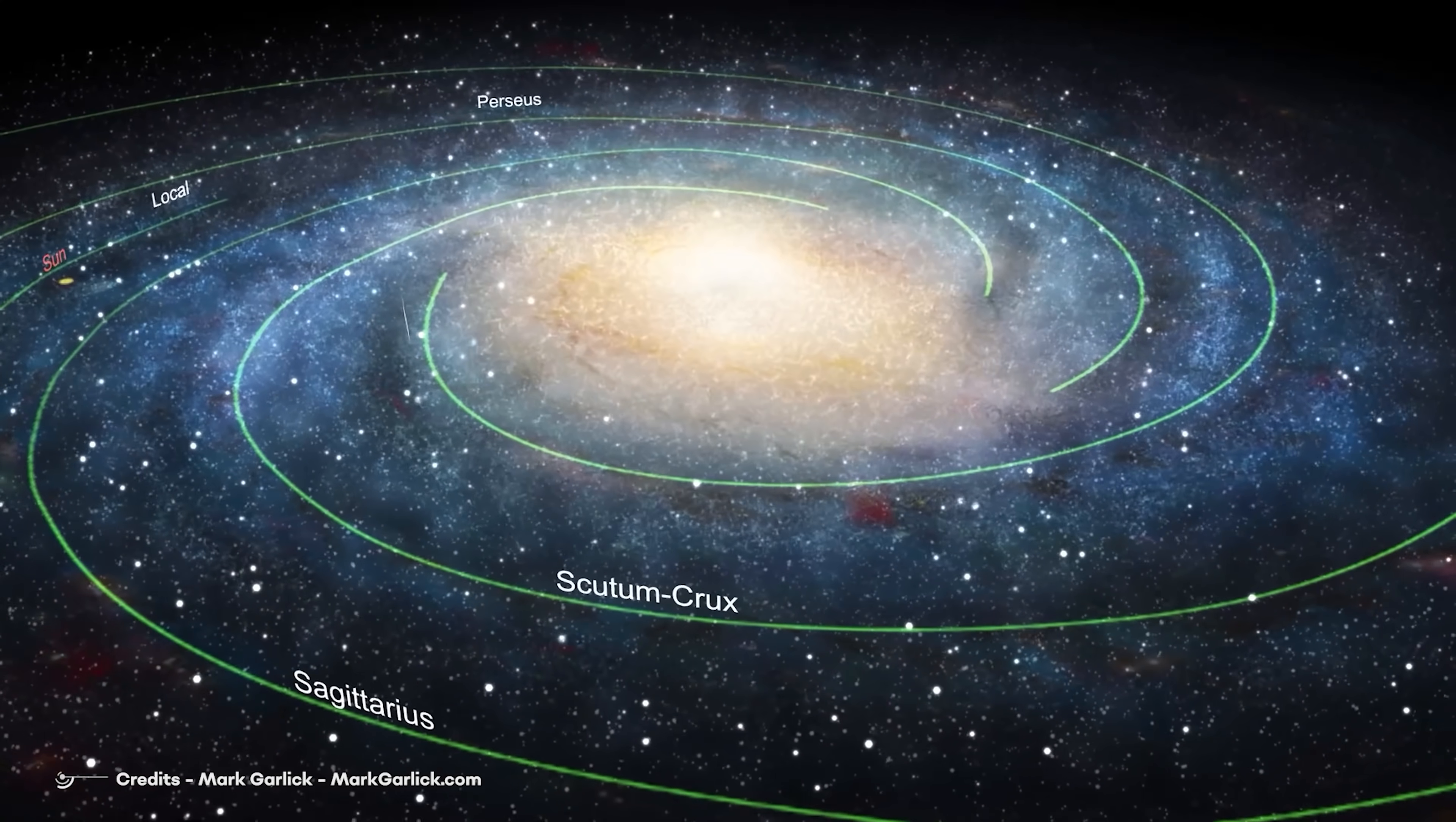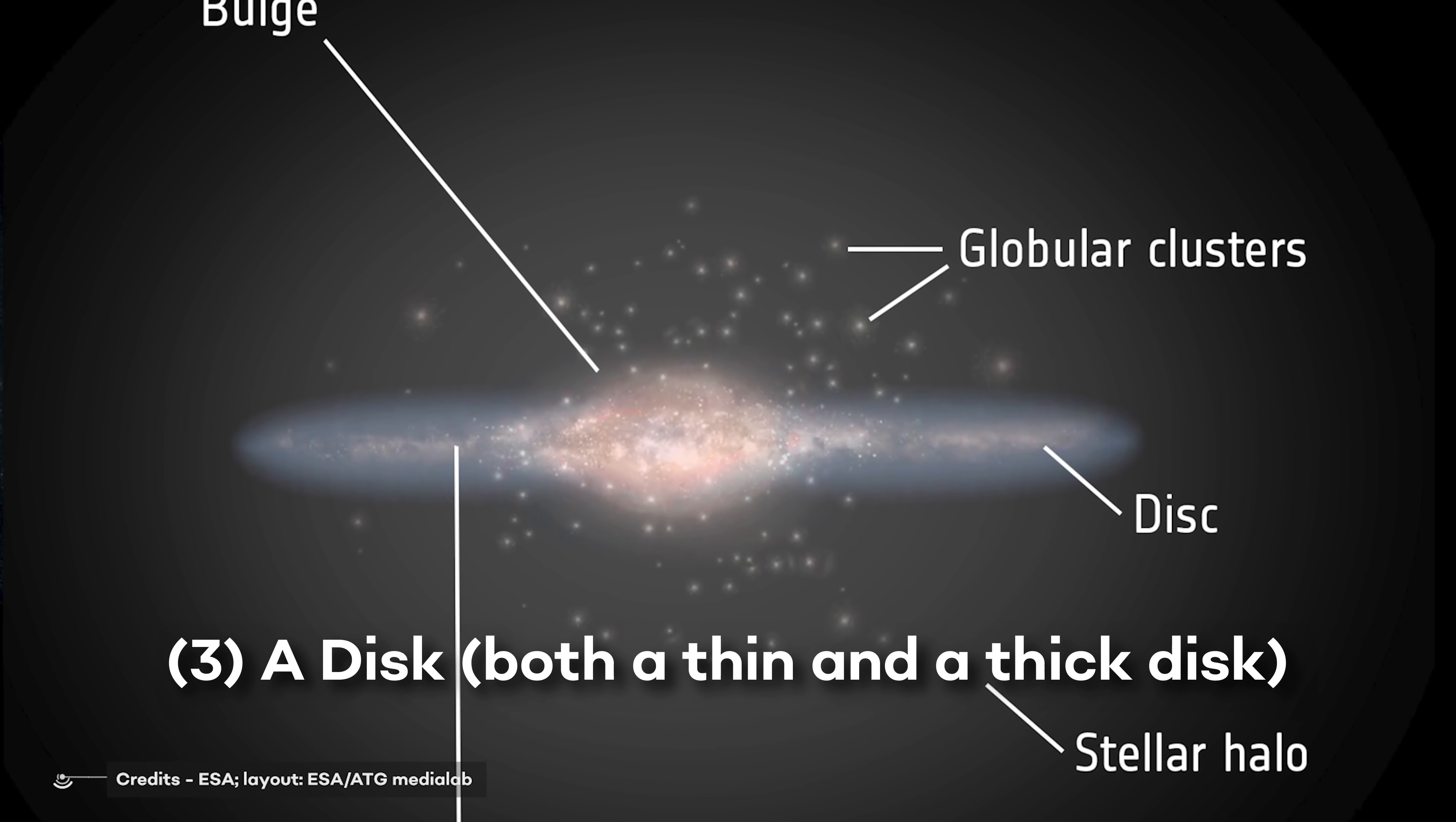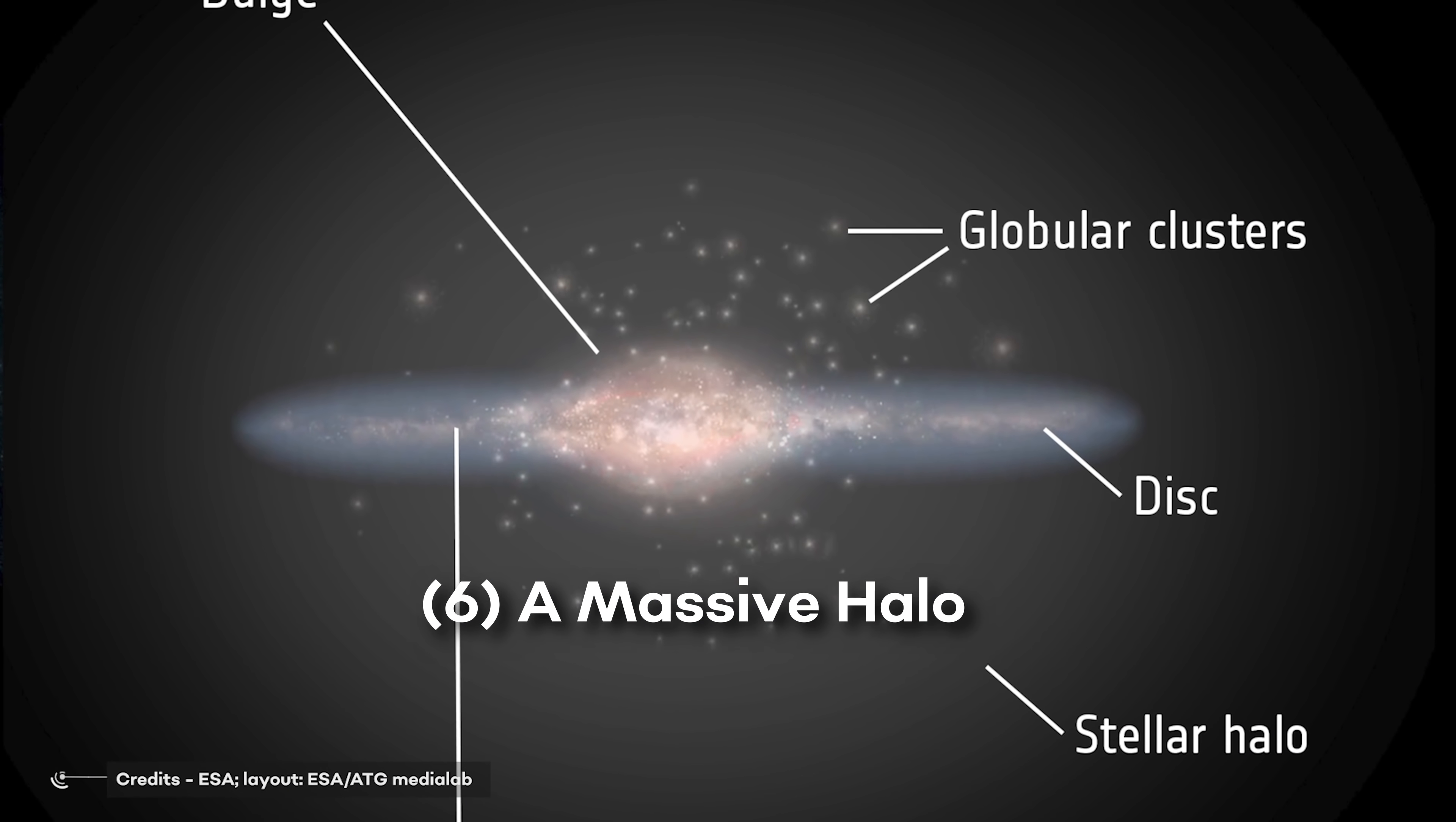This structure can be viewed as consisting of six separate parts: one, a nucleus; two, a central bulge; three, a disc, both thin and thick disc; four, spiral arms; five, a spherical component; and six, a massive halo.